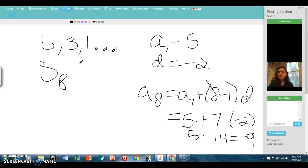Alright, so the sum of the first 8 terms, it's half the number of terms. So because we're looking for the 8th sum, we're going to do 8 over 4. And then we add the first term, and we add the last term, that was the negative 9. So 2 times negative 4, the sum of the first 8 terms is going to be negative 8.